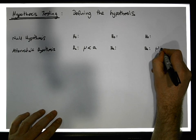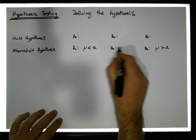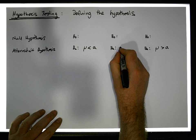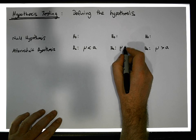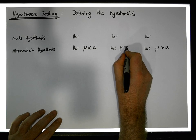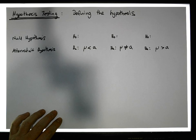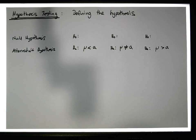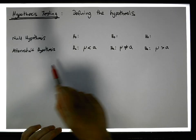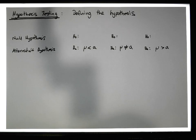Is there evidence to suggest that the population parameter is greater than a specific value? And the third possibility: is there evidence to suggest that the population parameter — the mean, the average — is different to a specific value? Those are the three tests we can do, the three questions being asked.